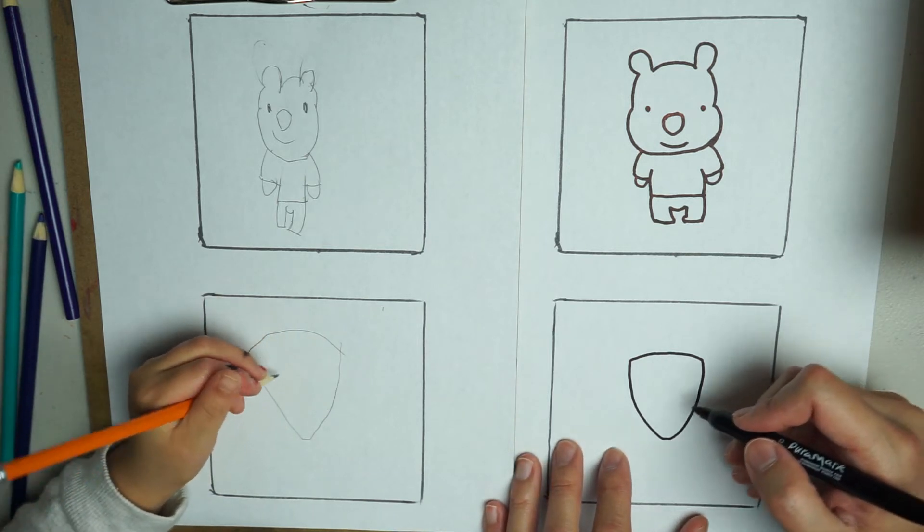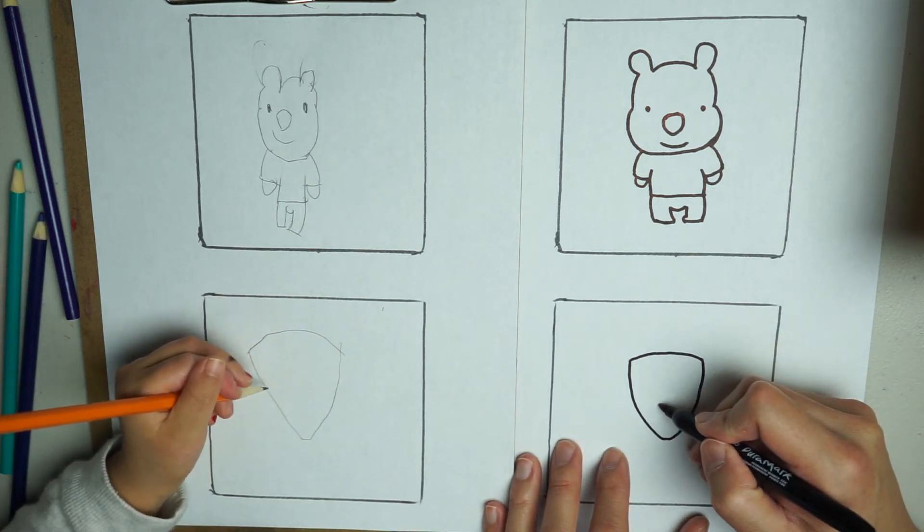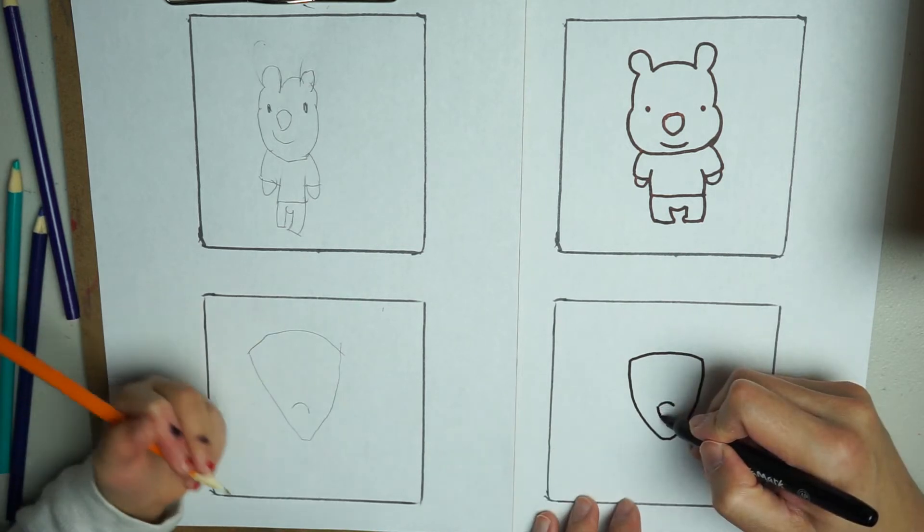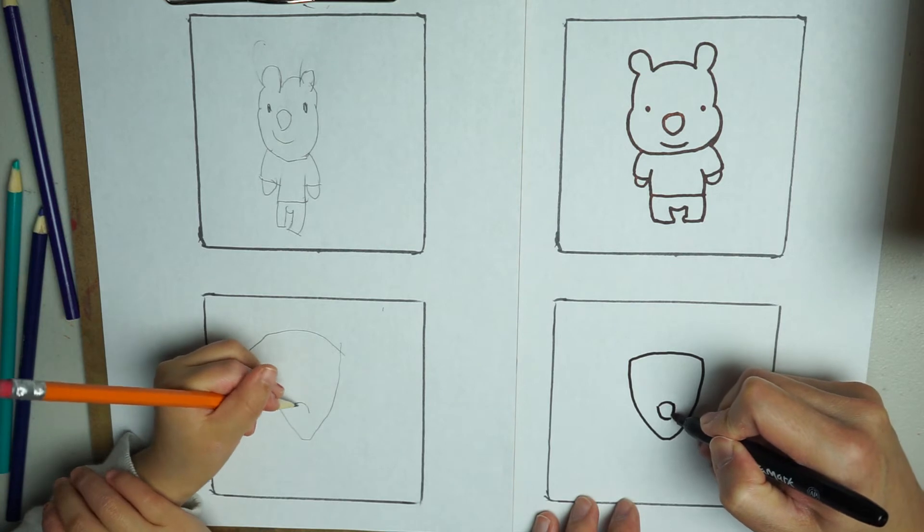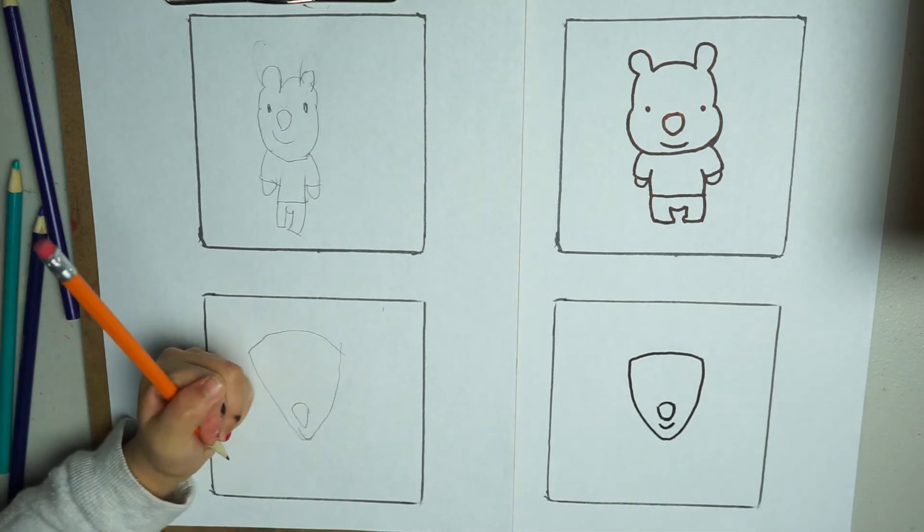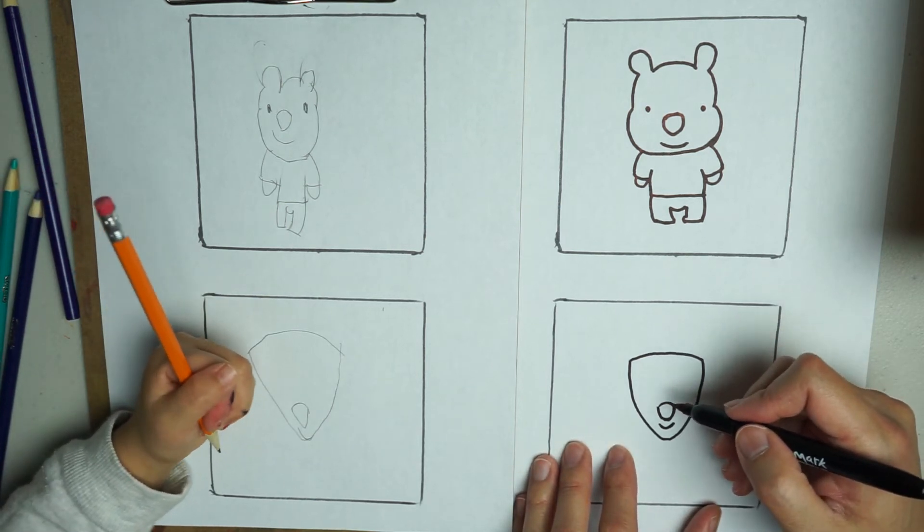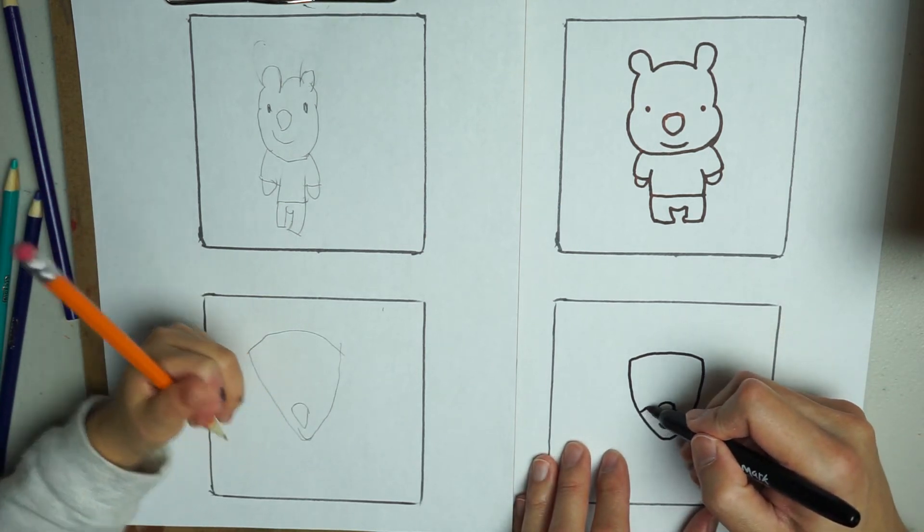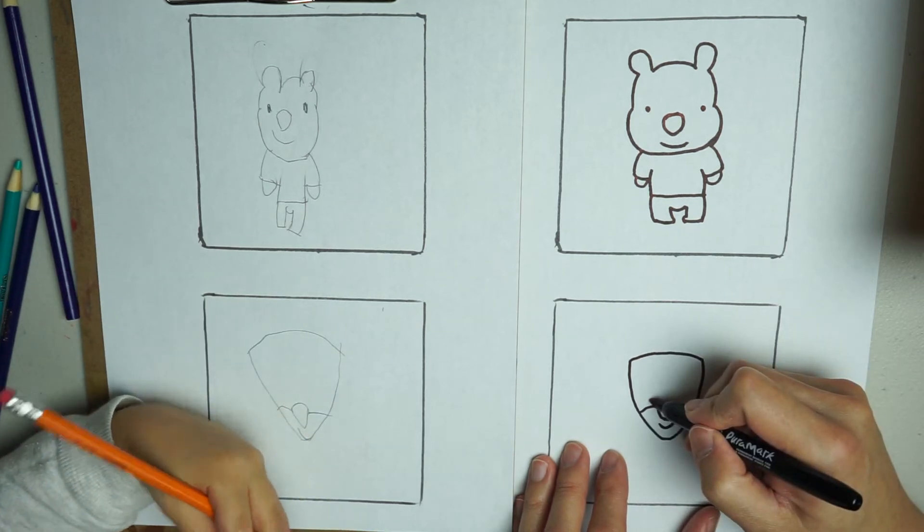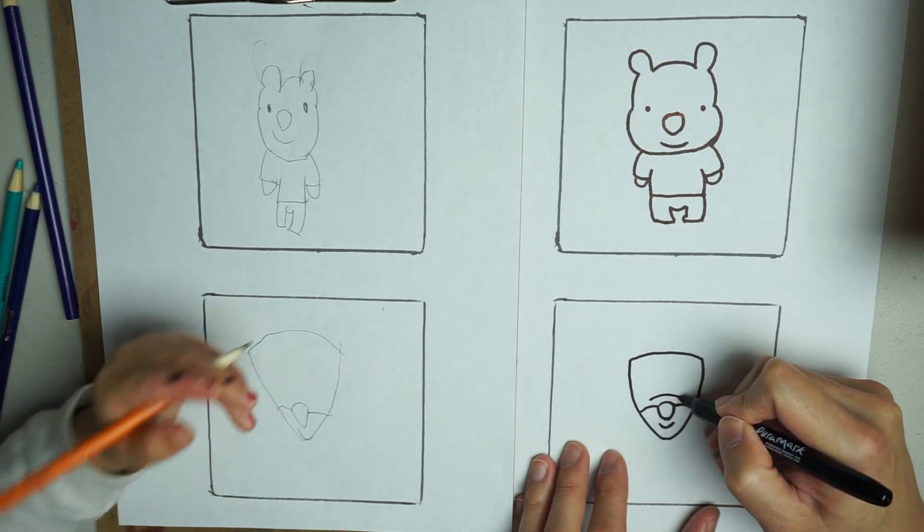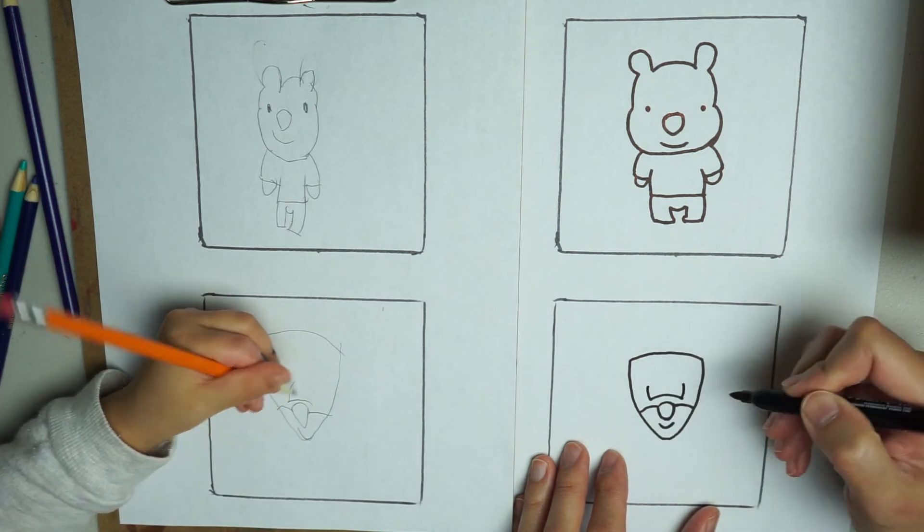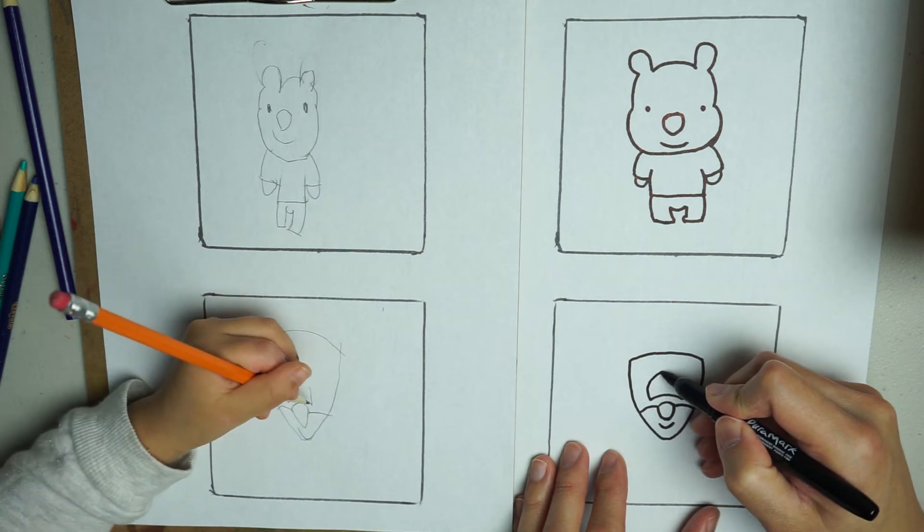We are going to draw his nose. Here in the middle. Smile. Then we are going to draw his face here. Connect. His eyes are here in the middle. One big curve. Then curve up. Then we are going to connect in the middle.